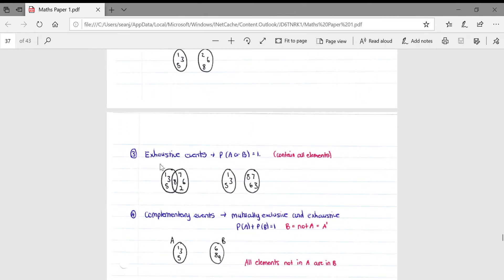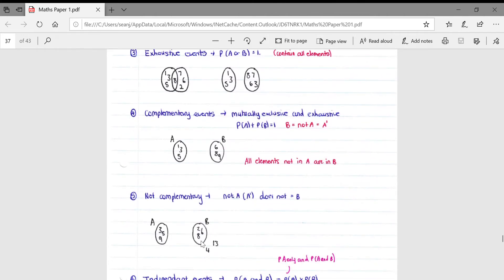Then if we look at exhaustive events, this is where the probability of A or B is equal to one, contains all the elements. Essentially what this is saying in simple English is that no matter what you do, there's a hundred percent probability that you will either get A or B. Simply meaning that there's no probability of getting an event occurring outside of A or B, such as these 13 or 4 which is outside of A and B.